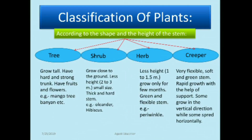The classification of plants according to the shape and height of the stem divides plants into four parts: trees, shrubs, herbs, and creepers. Trees can grow tall; they have a hard and strong trunk and produce fruits and flowers — for example, mango tree and banyan tree. Shrubs grow close to the ground, are two to three meters in height, and have thick, hard stems — for example, oleander and hibiscus.